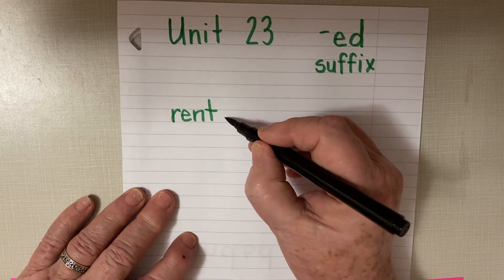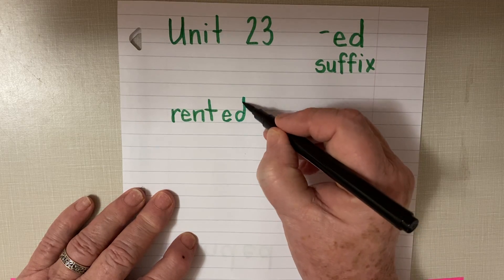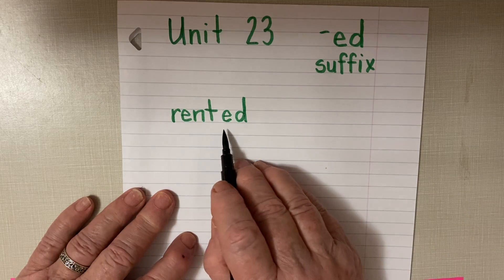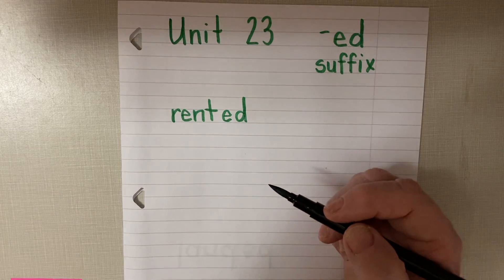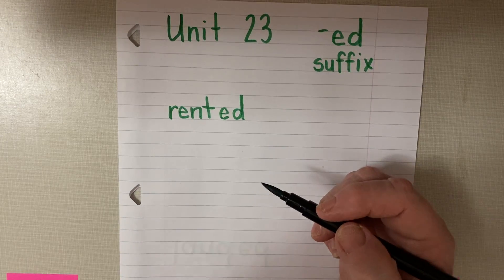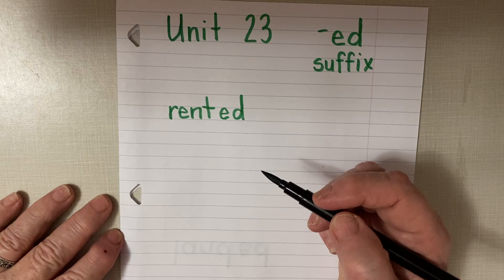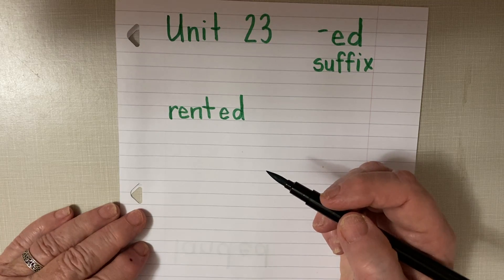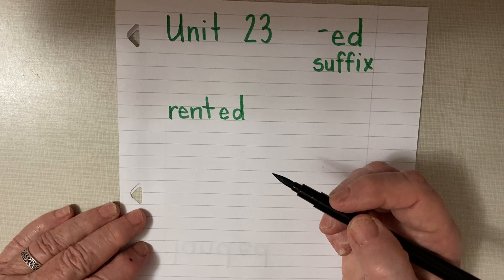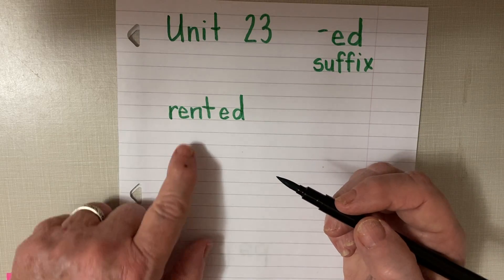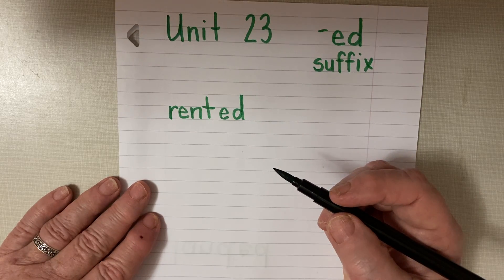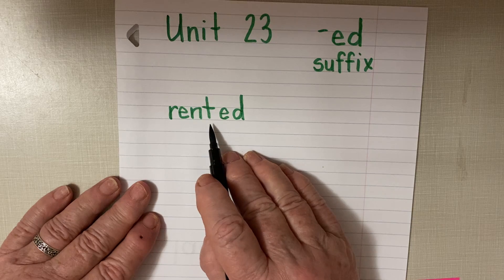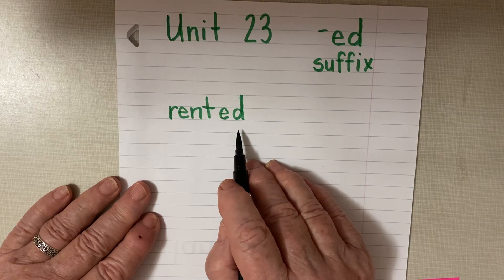When you add -ed to this — this is called the base word — when you add the suffix -ed to the base word 'rent,' you make a new word called 'rented,' and what that means is something that happened in the past. The sound is 'rented.' It adds a syllable. So when you have a t at the end of a word and you add the suffix -ed, it adds another syllable.